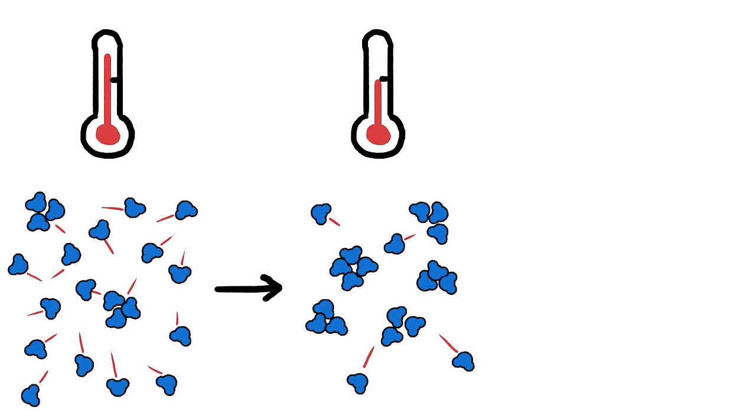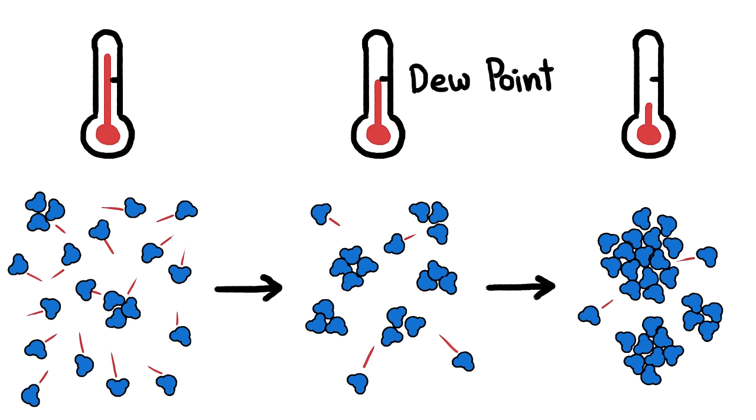Only when the air cools down past a certain point, called the dew point, does this breaking apart slow down enough for little clusters of water molecules to grow into droplets.